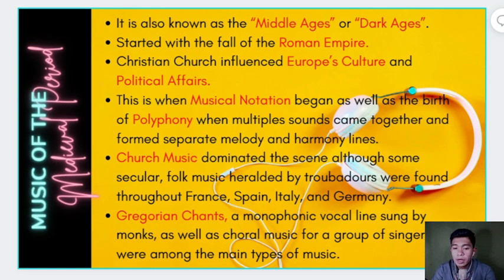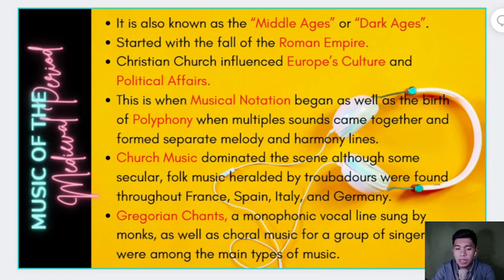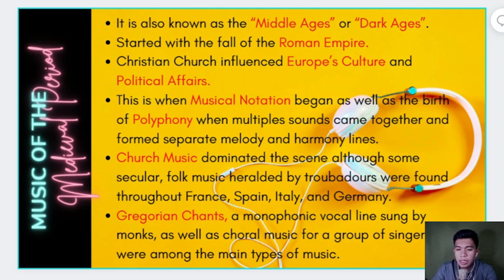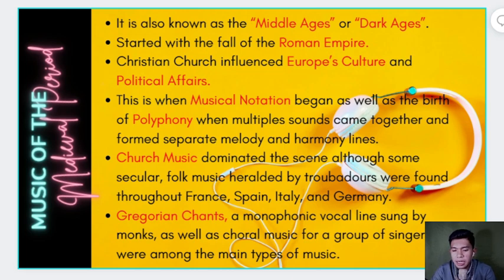The Gregorian chant is named after Saint Pope Gregory the First — that's where the title 'Gregorian chant' came from. It is the central tradition of Western plain chant: a form of monophonic, unaccompanied sacred song in Latin — and occasionally Greek — of the Roman Catholic Church. It was traditionally sung by choirs of men and boys in churches, or by men and women of religious orders in their chapels. Even in a group, they always sang in unison.